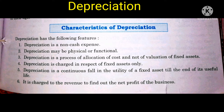Fifth: depreciation is a continuous fall in the utility of fixed assets till the end of its useful life. The utility of fixed assets — meaning the benefit to the business — continues to fall until the useful life of the machinery comes to an end.